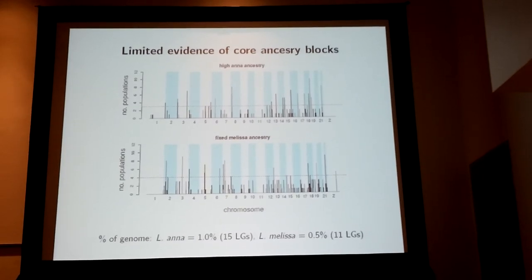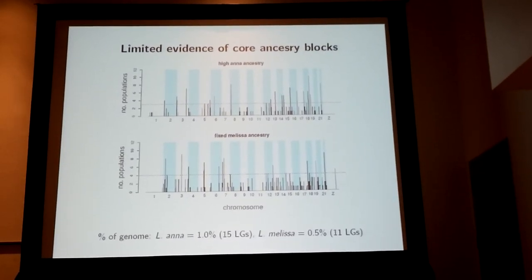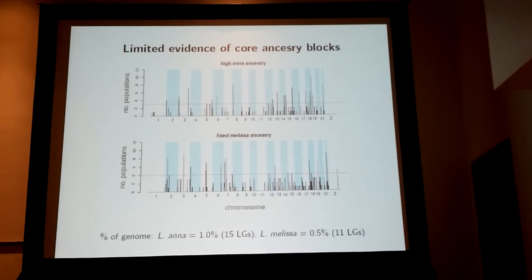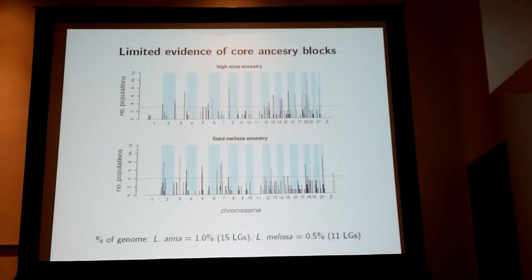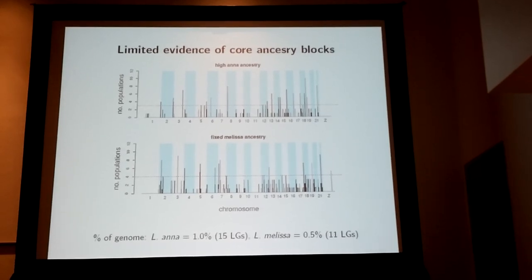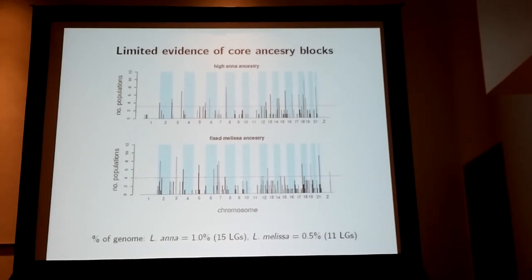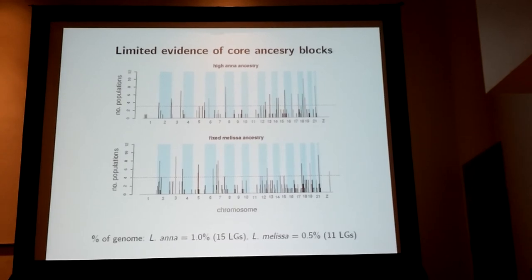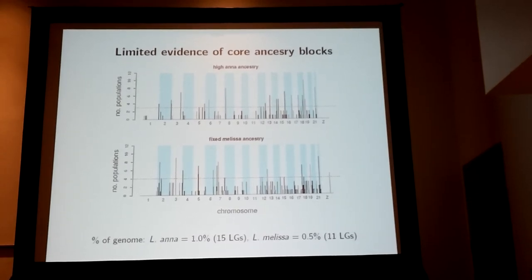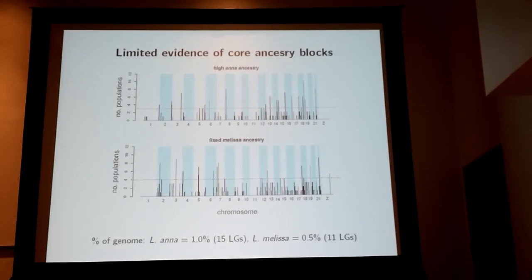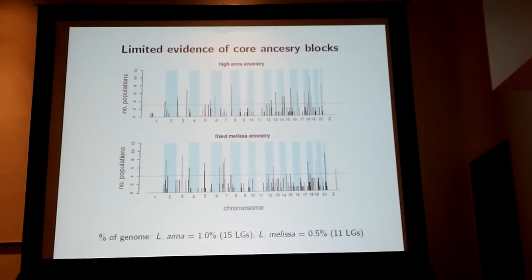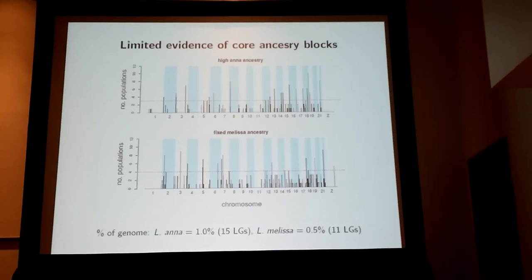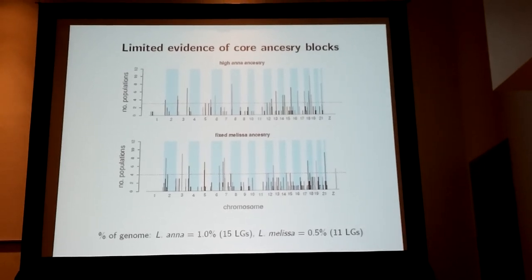Finally, I want to think about any core ancestry blocks that might be fixed or nearly fixed across all populations, as these could be particularly important for adaptation and speciation. The answer is no — there are no ancestry blocks fixed or nearly fixed across all populations. There are however numerous ancestry blocks with very high consistency in many or most populations, and these occur more often than expected by chance, as shown here. This either means there are a couple of different solutions to alpine adaptation that come up in different populations, or that the extreme ancestry blocks we're picking up aren't necessarily the most important ones for speciation. Thank you.